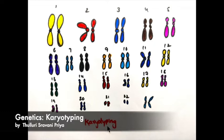Now we'll see the topic karyotyping. First you have to know what is meant by karyotype. The karyotype is a chromosomal representation of an individual. In other words, a photomicrographic representation of individual chromosomes which are arranged in a standardized manner is also known as a karyotype.